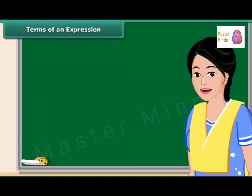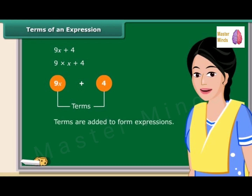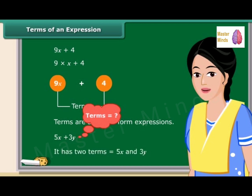Now we will discuss what the terms of an expression and their factors are. Consider the expression 9X + 4. In forming this expression we first form 9X separately as a product of 9 and X, and then add 4 to it. These parts formed separately and then added are called terms. For example, 5X + 3Y has two terms.